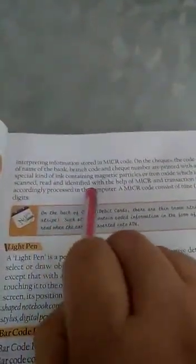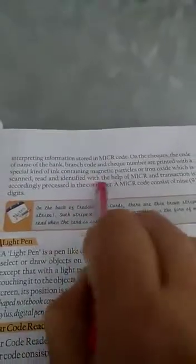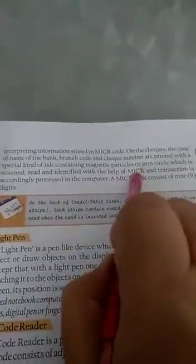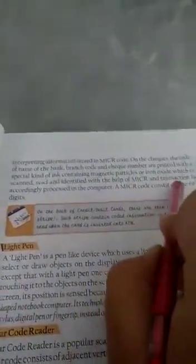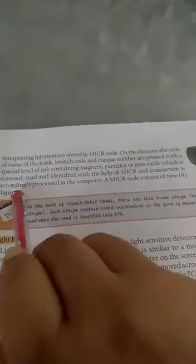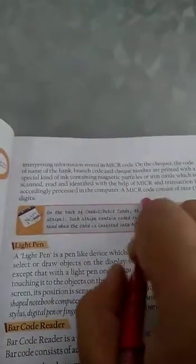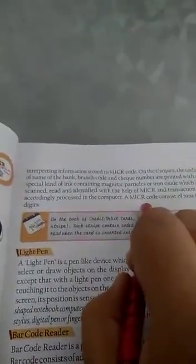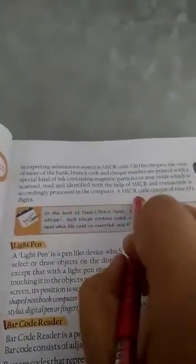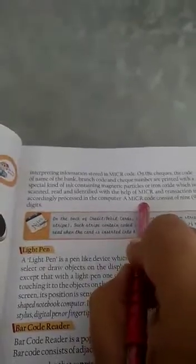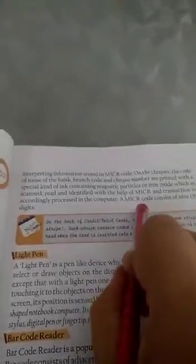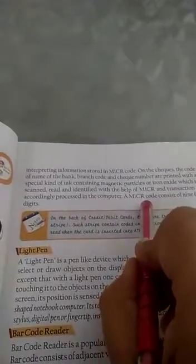Which is scanned, read and identified with the help of MICR and transaction is done accordingly. So, basically a MICR device is used to read the magnetic ink used for various purposes.